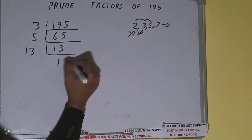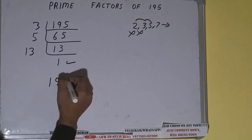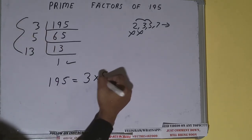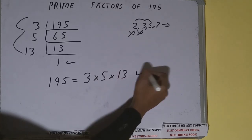Once we get one, we need to stop and do one last thing. That is, the prime factors of 195 will be whatever we have on the left-hand side, that is 3 × 5 × 13. That would be the answer.